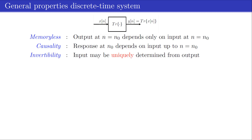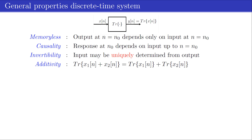A system property that is important in applications such as channel equalization and deconvolution is invertibility. A system is said to be invertible if the input of the system can uniquely be determined from the output. In order for a system to be invertible, it is necessary for distinct inputs to produce distinct outputs. An additive system is one for which the response to a sum of inputs is equal to the sum of the outputs individually. A system is homogeneous if scaling the input by a constant c results in a scaling of the output by the same amount.